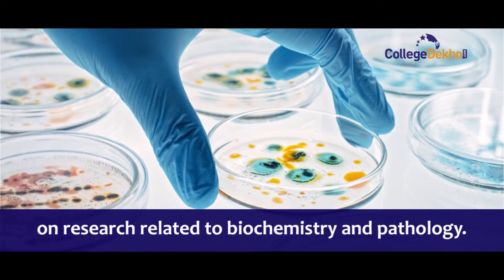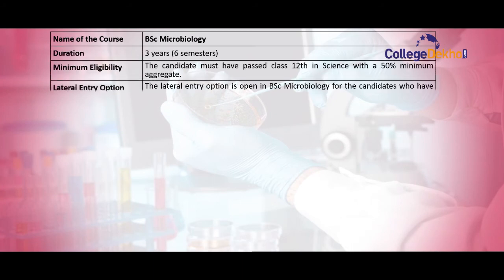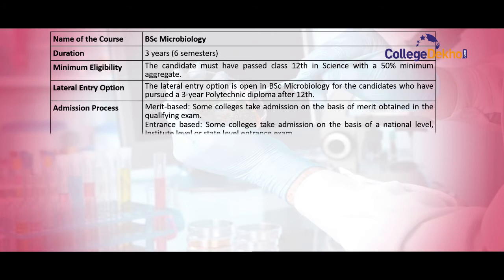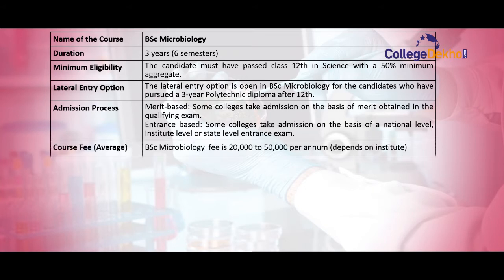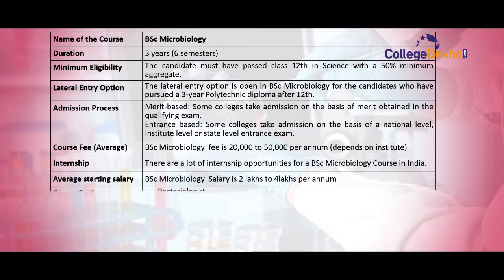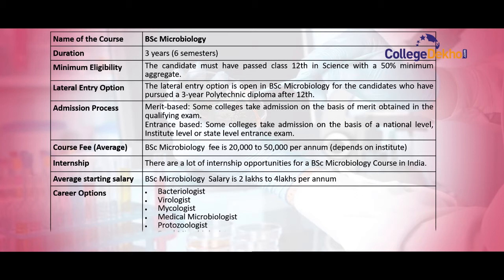BSc Microbiology course also focuses on research related to biochemistry and pathology. Now let's check the highlights: course name - BSc Microbiology, duration - three years, six semesters, minimum eligibility - candidates must have passed class 12th in science with 50% marks, admission process - merit-based and entrance-based, course fee - around 20,000 to 50,000 per annum, starting salary on average - 2 lakhs to 4 lakhs per annum, career options - virologist, mycologist, medical microbiologist, protozoologist, food microbiologist, and geneticist.